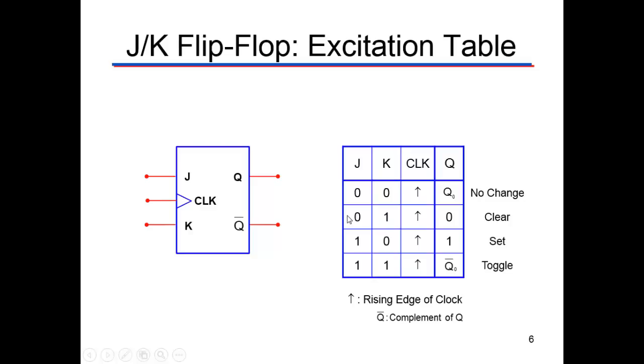So here would be the way this works. When J and K are both zero and the clock comes by, Q will just stay what it was. It'll stay Q naught, meaning it'll stay what it was in the previous state. It's just going to stay the same.